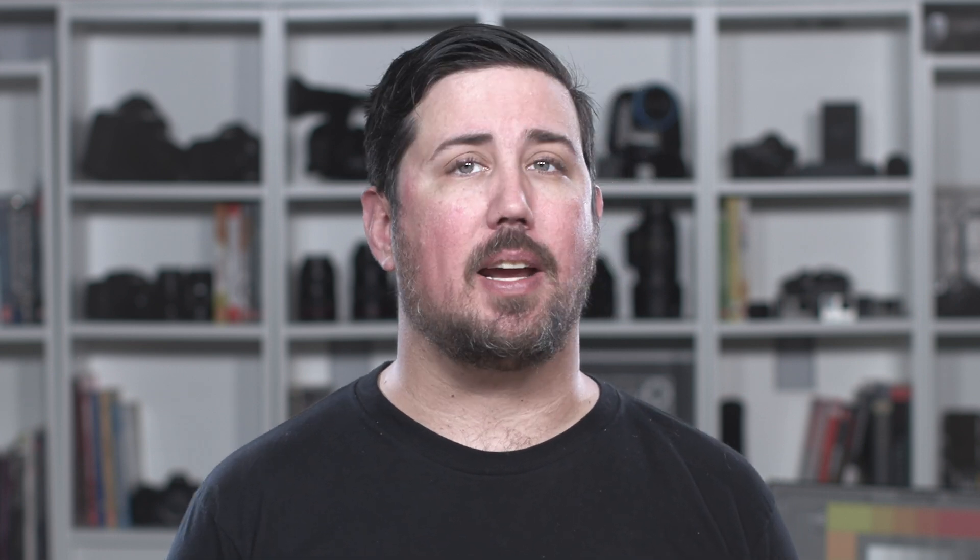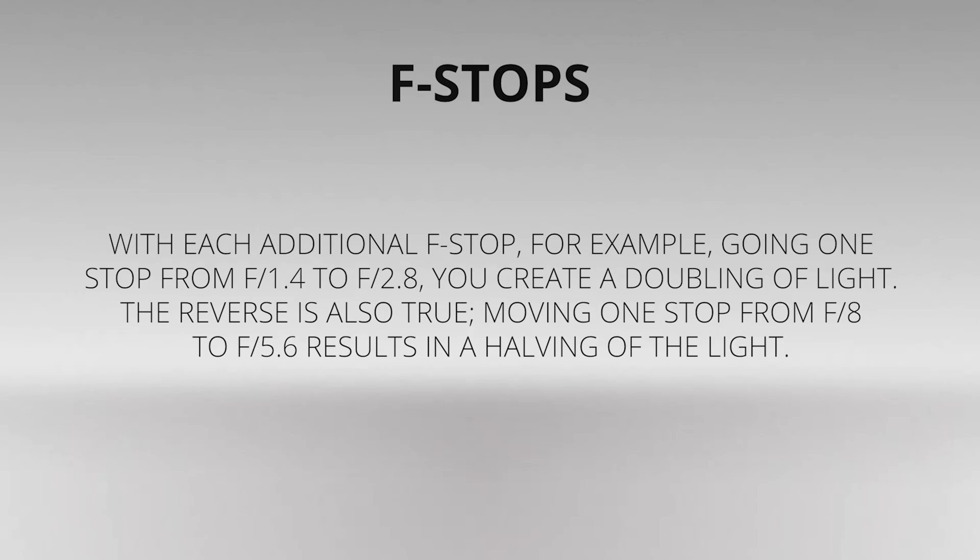To measure the contrast ratio, you'll need a light meter. The process starts with measuring the main source of light, or the key light. Get a reading from the brightest area on the face of your subject. Then measure the area lit by the secondary light, or fill light. The information you have just gathered is in f-stops, a measure of light.